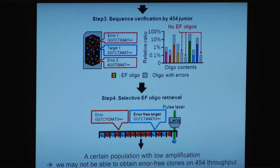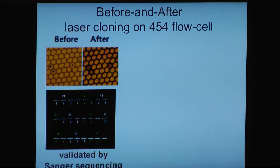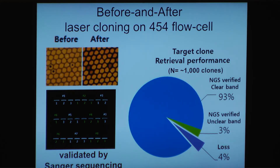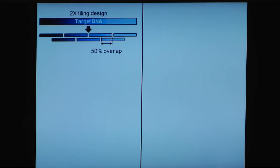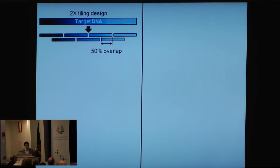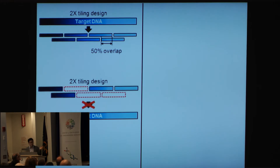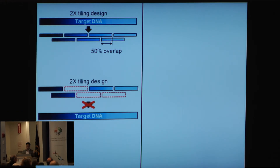That means for certain populations with lower amplification, we may not be able to obtain error-free oligo clones from the 454 sequencer. This was actually demonstrated — we were able to retrieve only 93% out of 1,000 clones. This was a real problem for the synthesis of genes, because for traditional synthesis of target genes we use a 2x-tiling strategy, and when we miss even one error-free oligonucleotide, we won't be able to synthesize the target gene.